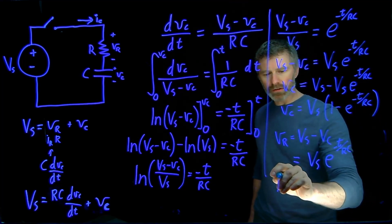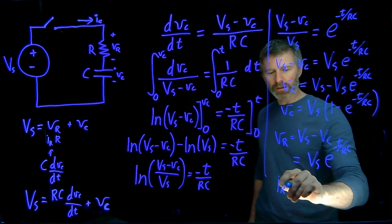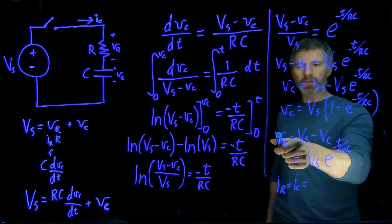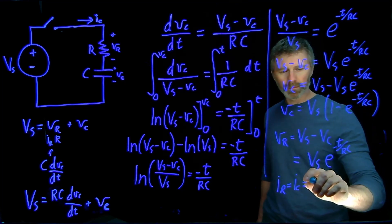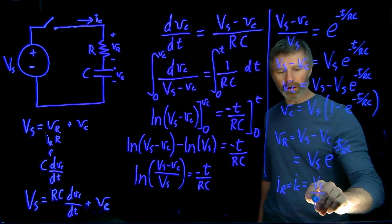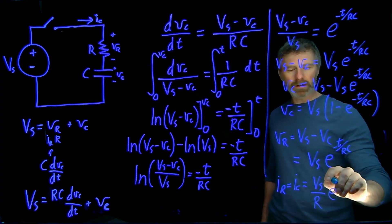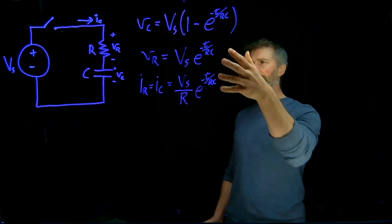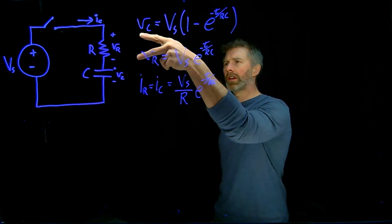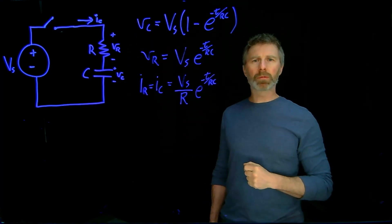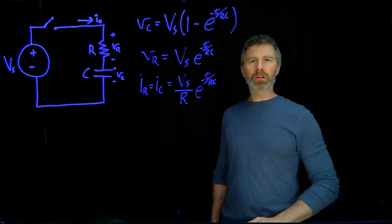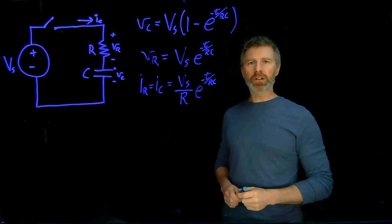The current through the resistor — which equals the current through the capacitor — is Vr over R, giving us Ic equals (Vs over R) times e to the negative t over RC. Those are the three expressions for voltage across the capacitor, voltage across the resistor, and current through both devices. In a moment I'll plot these out so you can see how they change over time.